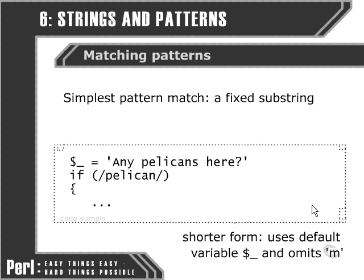If we use the default variable — this special variable over here — we can use our regular expression without specifying which string we're going to search against. Just like most other functions within Perl, the special variable dollar underscore acts as the default variable that the function will operate on if we don't specify any particular variable on which we want our function to be carried out.